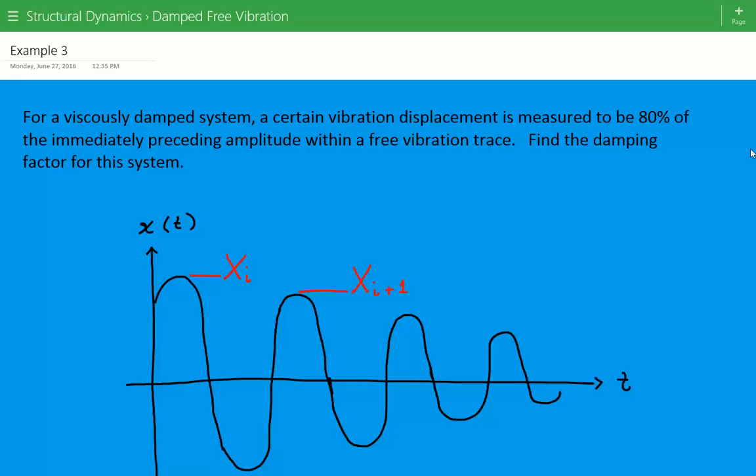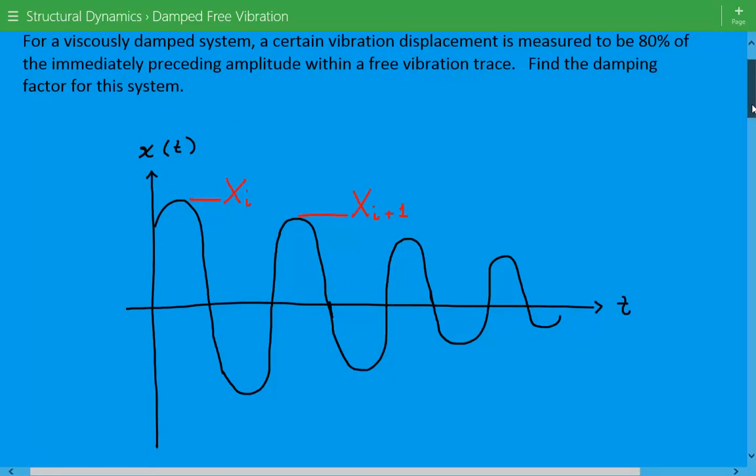So, if the displacement of this system is given by this figure below, what we're saying is that we've measured a certain displacement. The first one we call it x sub i, and the next one, x sub i plus 1, is equal to 0.8 times x sub i. So for this system, we need to find the damping factor.